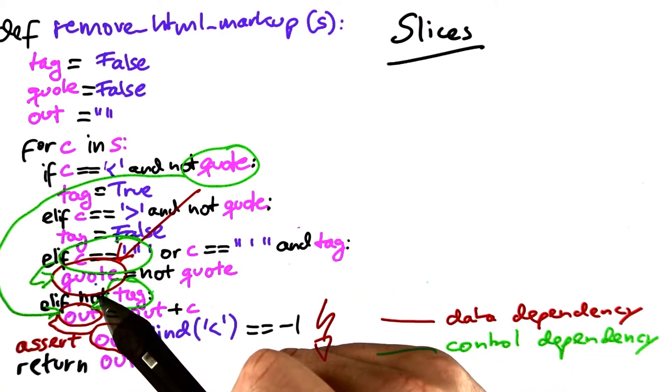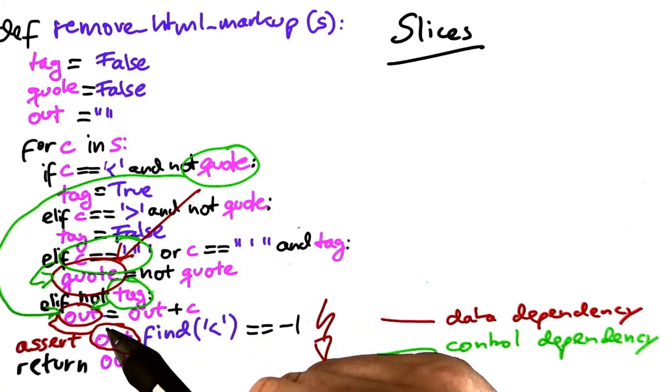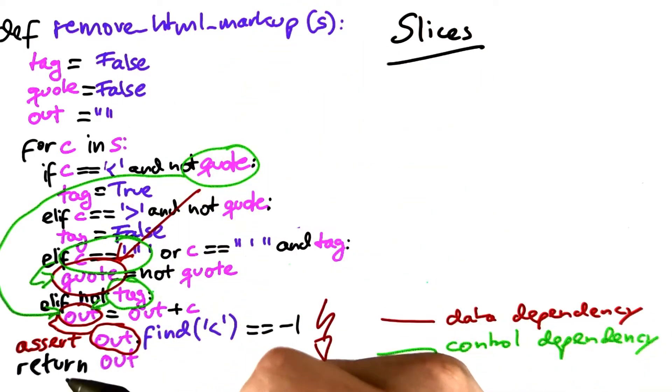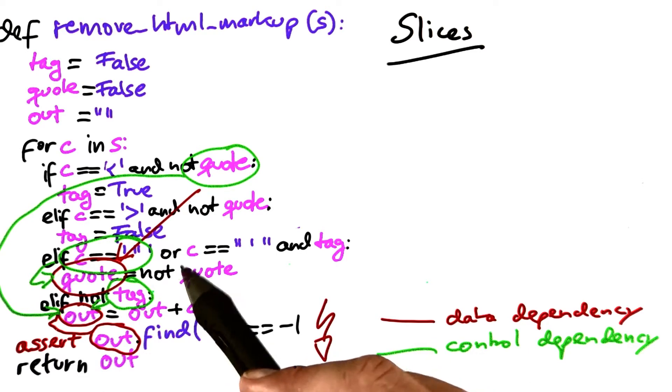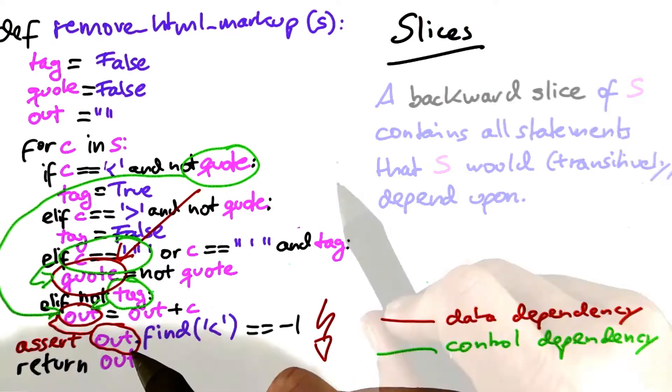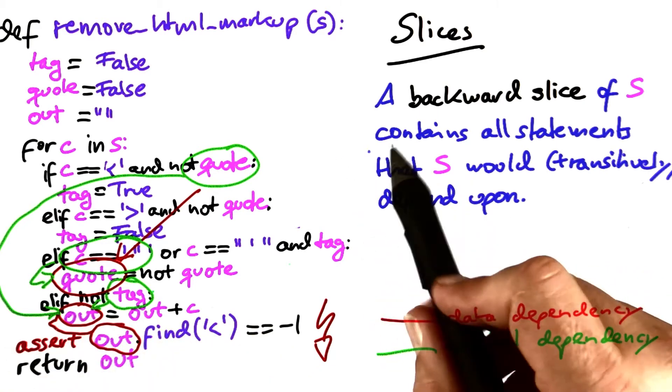If you keep on following data dependencies and control dependencies starting from a given statement, the set of statements which you get—that is, the set of statements that possibly could have influenced the statement in question—is also called a program slice.